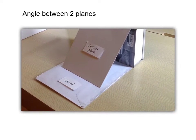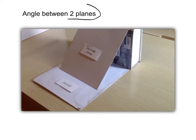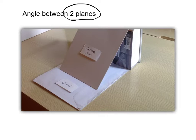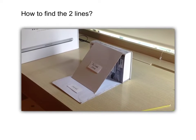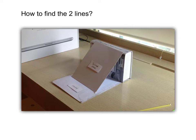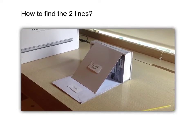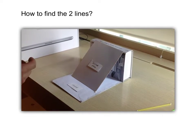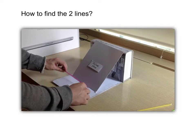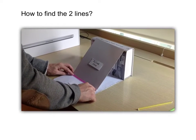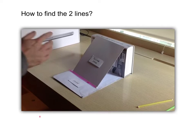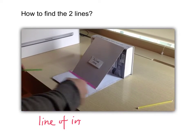But now we have two planes, so where should I find the two lines? There are actually three steps. The first step: we have to find the line of intersection of the two planes. That is represented by the red drinking straw. This is our line of intersection.